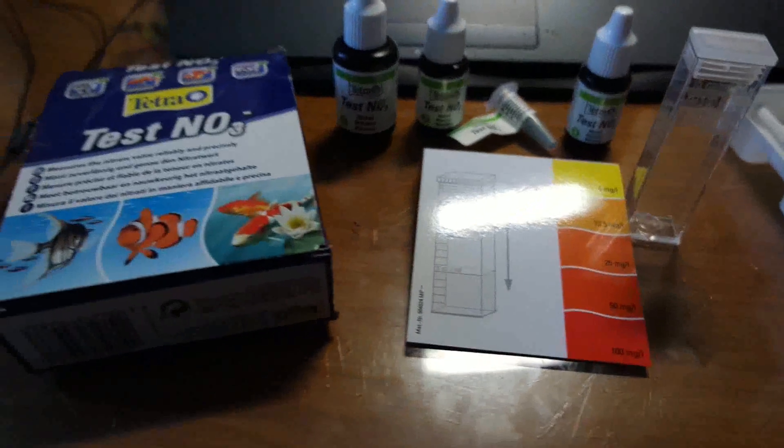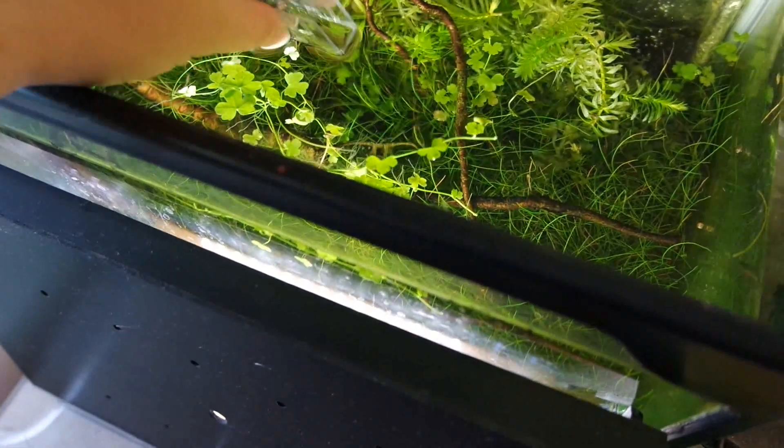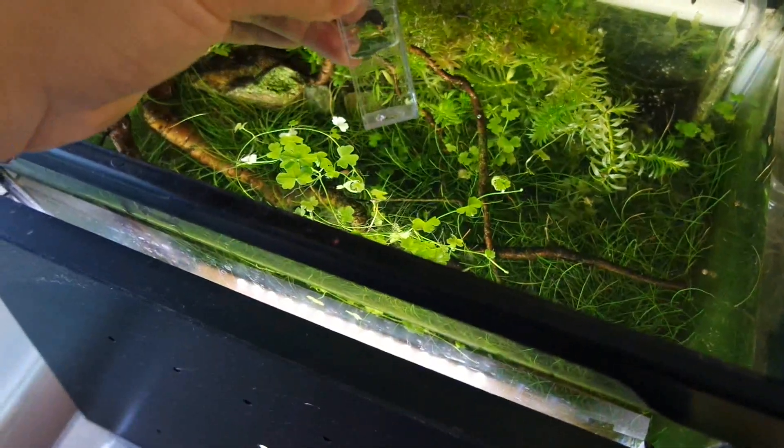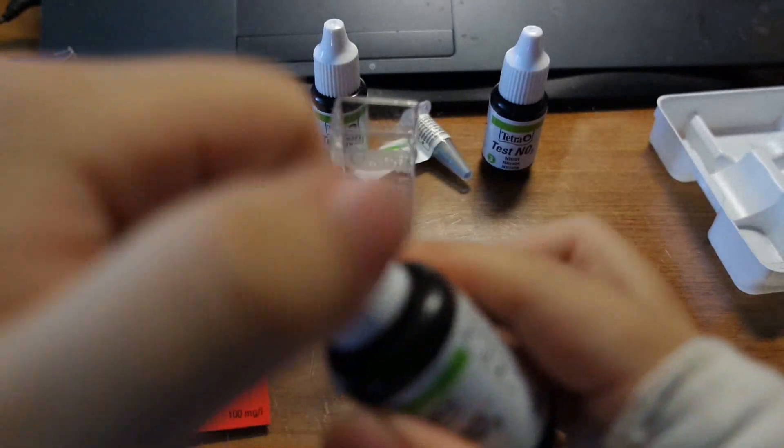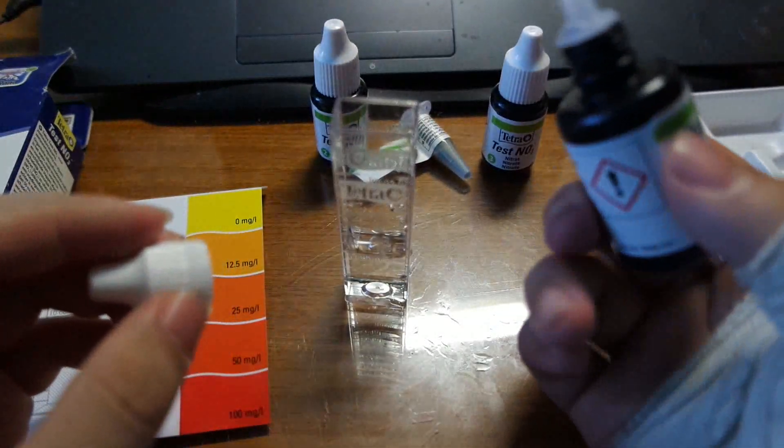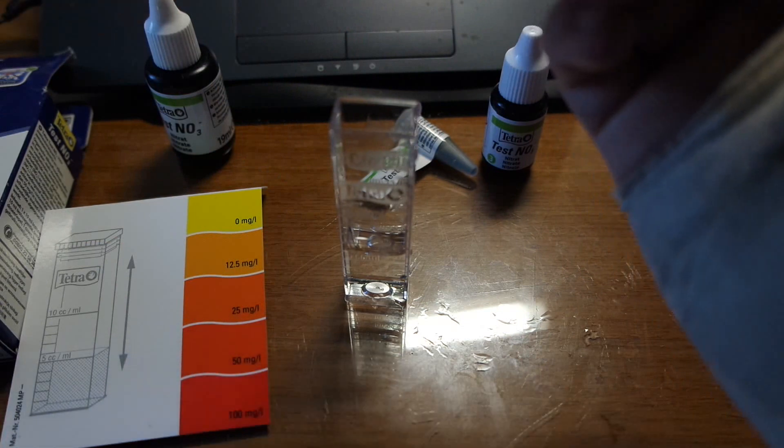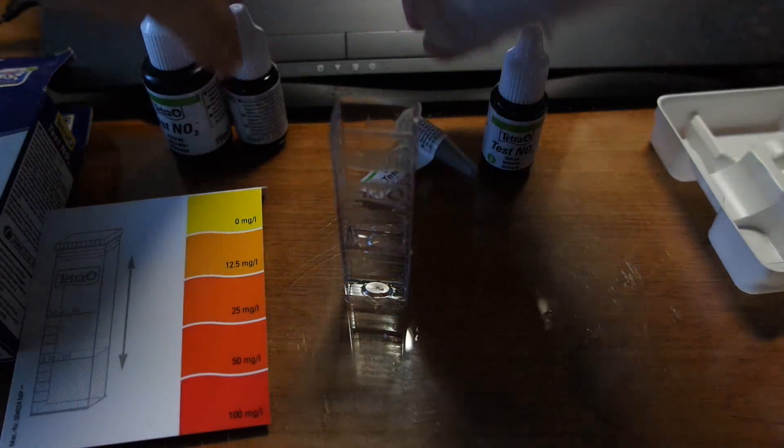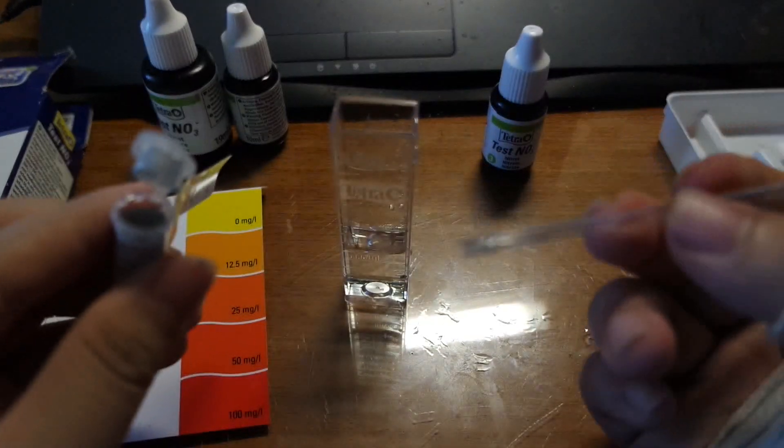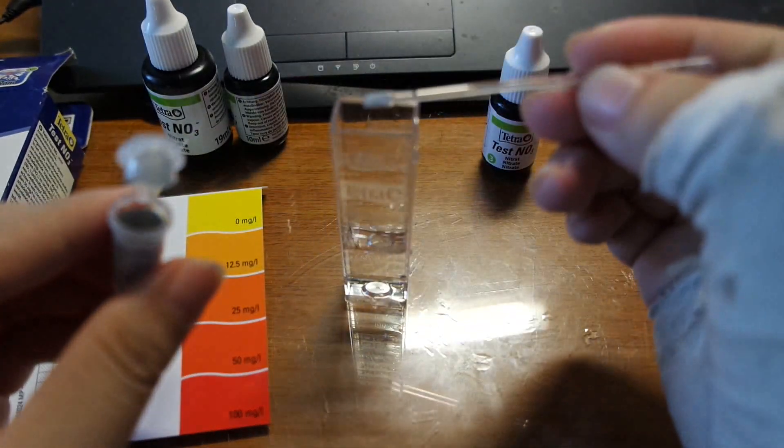I will be testing all of my tanks. First up is my No Water Change Nano Planted Tank. I'll be getting a little bit of water there. Okay so here is the tank water. First thing I got to do is add 14 drops of solution number 1, and then we add 7 drops of solution number 2, and then we add a small amount of this powder here. The kit comes with a tiny little spoon for that. So I am just going to scoop some up and add it in.